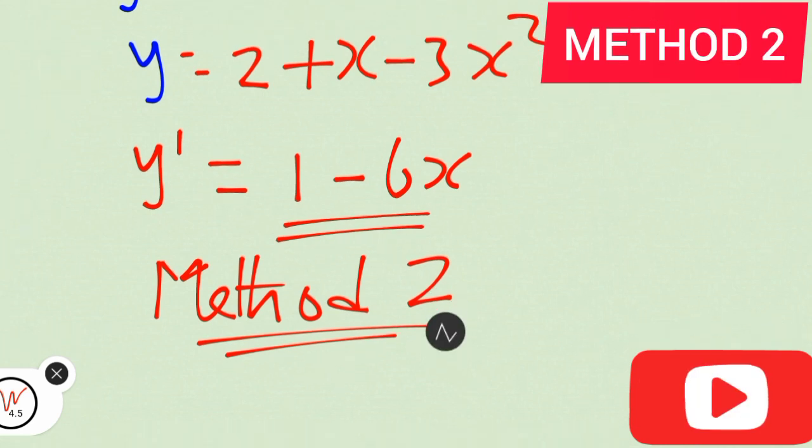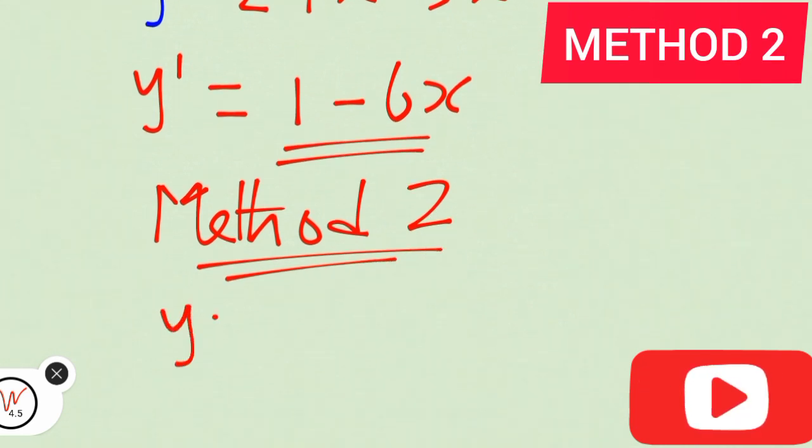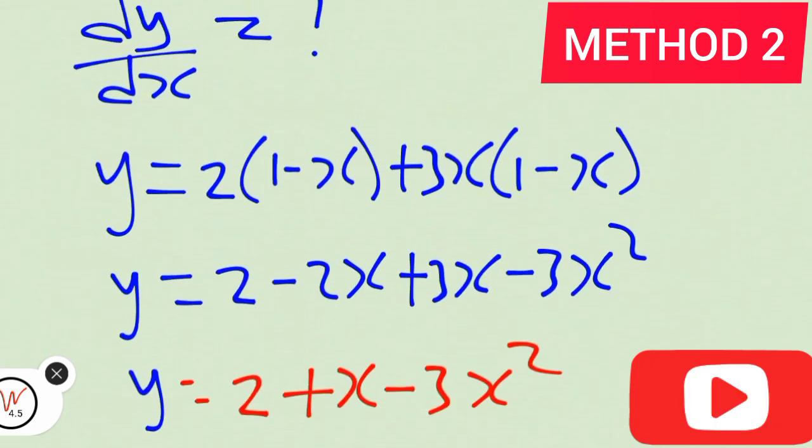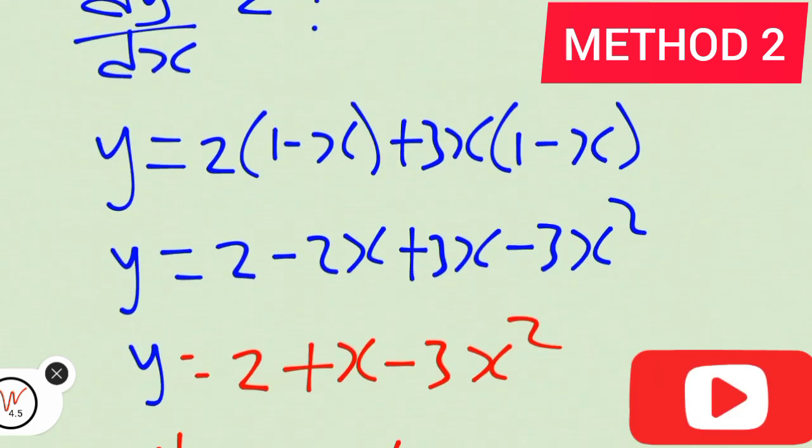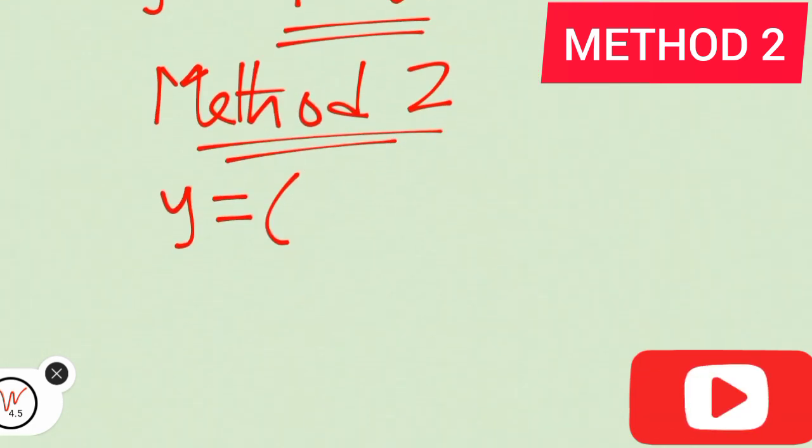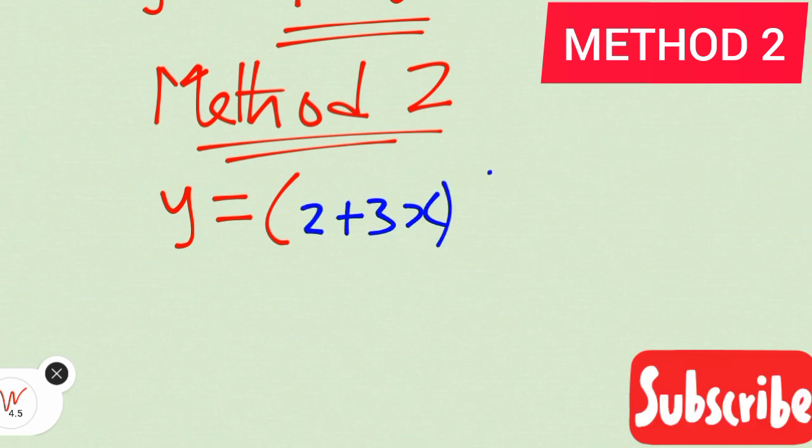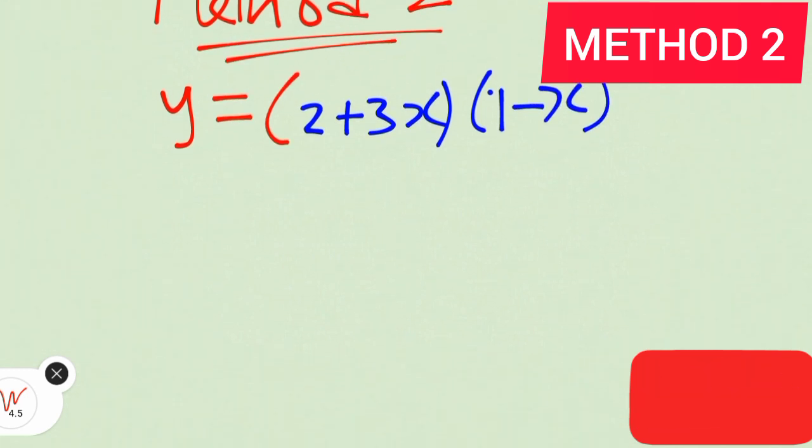Method 2. We have y equals (2 + 3x)(1 - x). We want to use product rule.